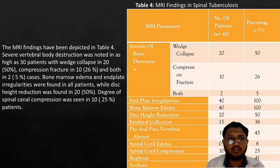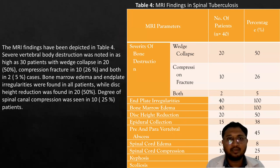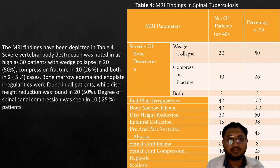The MRI findings showed severe vertebral body destruction noted in as many as 30 patients, with wedge collapse seen in 20 and compression fracture in 10 patients. Bone marrow edema and endplate irregularities were found in almost all patients, while disc height reduction was found in 20 patients and significant spinal canal compression was seen in 10 patients.